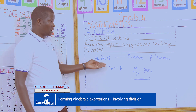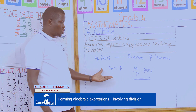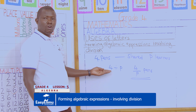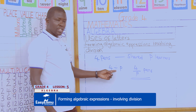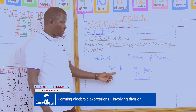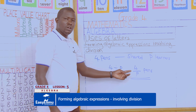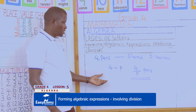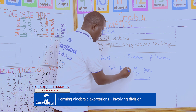Sharing four pens among p learners — each learner gets four divided by p. You can use the division sign or write it as a fraction. Both notations are the same.